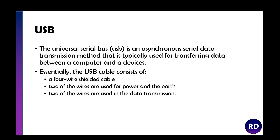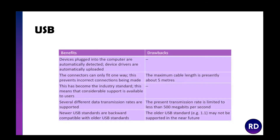USB — the Universal Serial Bus — uses an asynchronous data transmission method and is used for transferring data between a computer and a device. USB has a shielded cable with four wires: two are used for power and two for data transmission. A key benefit of USB is plug and play — when you plug in a USB device you hear a sound and the computer automatically reads the device drivers. The connector also fits in one way, preventing incorrect insertion. However, beyond around five meters the speed starts to drop.